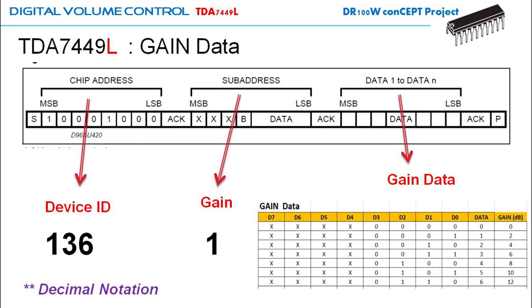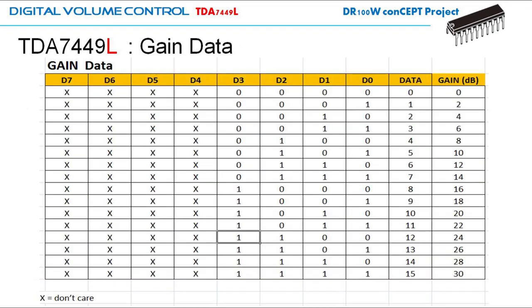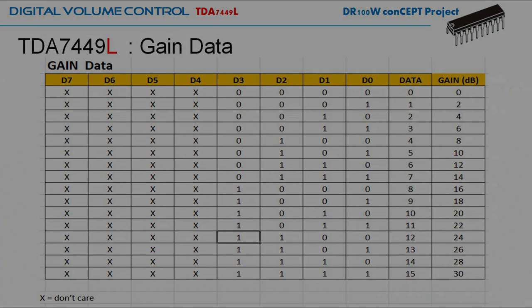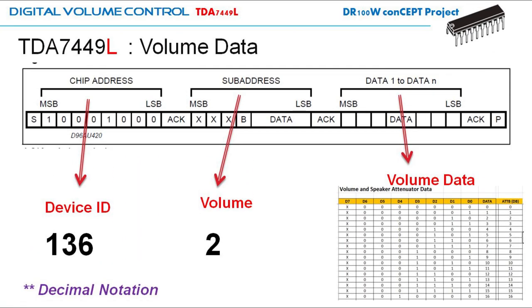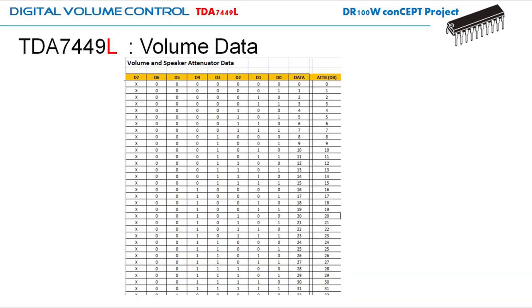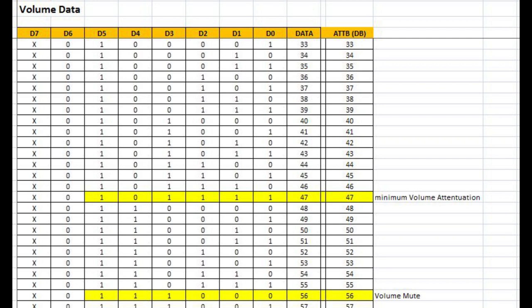That will be the same for the gain, but since the gain is from 0 dB to plus 30 dB in 2 dB steps, there will be more data — a total of 15 data values to choose from. The same applies for the volume function, with data from 0 to minus 47 dB — that is an attenuation followed by mute in 1 dB steps.